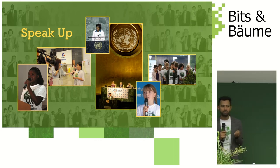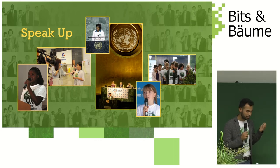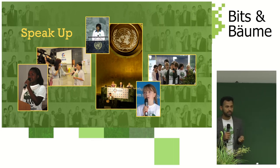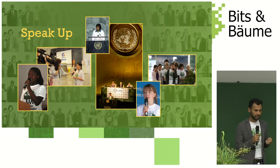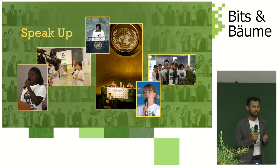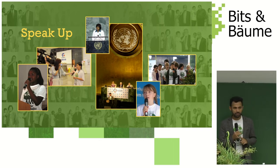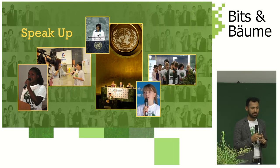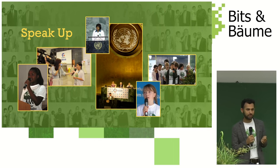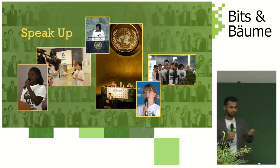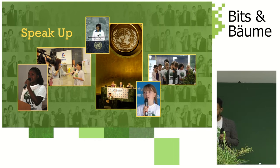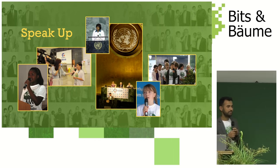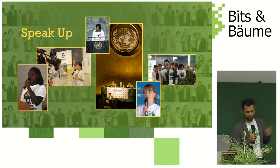Climate justice for us means that while there are people emitting a lot of carbon in the Global North, people in the Global South should be compensated. People in the Global South should benefit in some ways because they are living in poverty, without education, without good healthcare — while we in Europe, America, China, and other countries are emitting more emissions. Our ambassadors have even spoken at the United Nations.